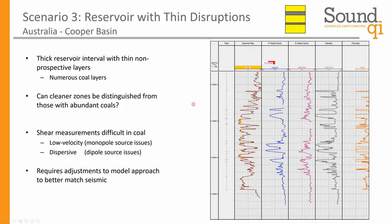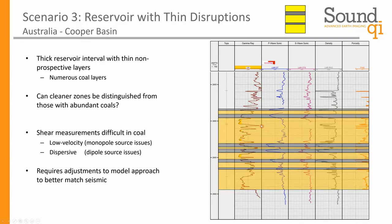The final scenario flips things around. Before we looked at a constant background with a thin reservoir; this time we look at a larger reservoir with thin disruptions within. This example comes from the Cooper Basin in Australia, where we have a fairly thick reservoir interval but with a number of non-prospective coal layers within it. Some zones have quite a high number of coals, others have fewer, and we want to distinguish between these two zones as we plan field development.